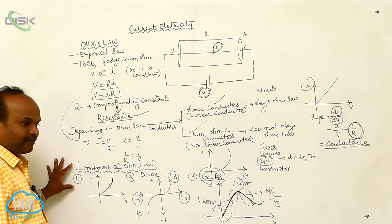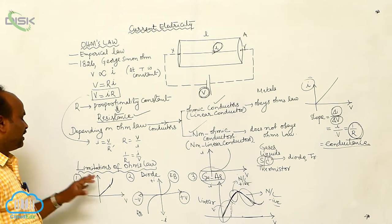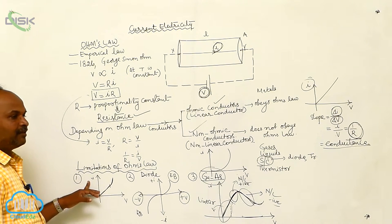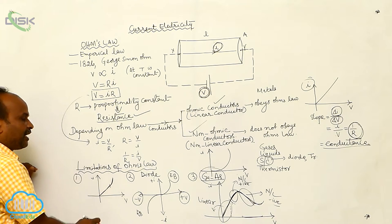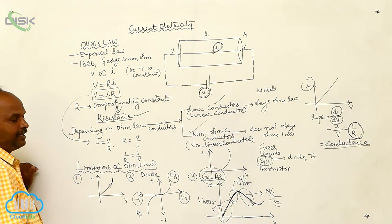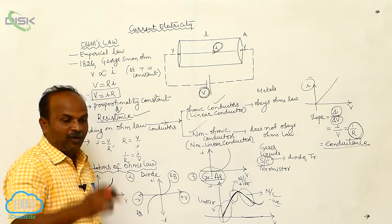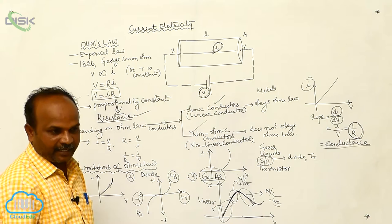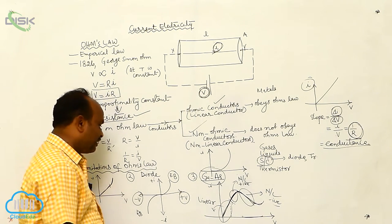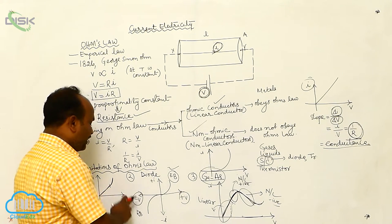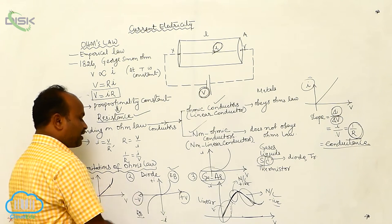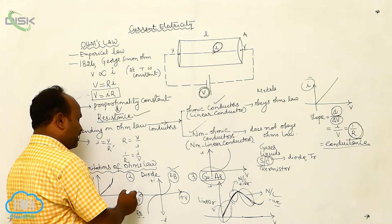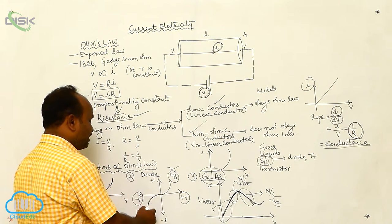In summary, there are certain limitations of Ohm's law. For a conductor, at lower voltages there is a linear relationship between voltage and current, but if voltage is further increased, the graph becomes curved — non-linear. For a diode, the voltage-current relationship depends on the biasing: in forward bias, current increases with voltage non-linearly; in reverse bias, negative voltage is increased and current increases non-linearly.